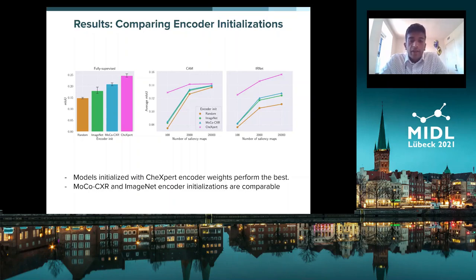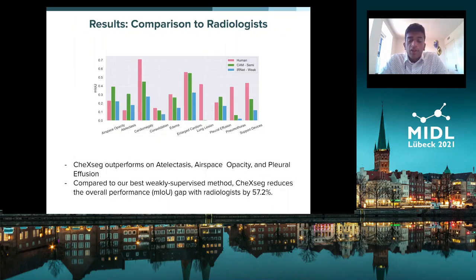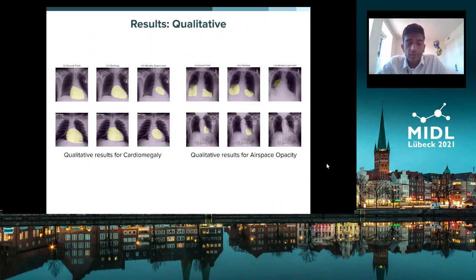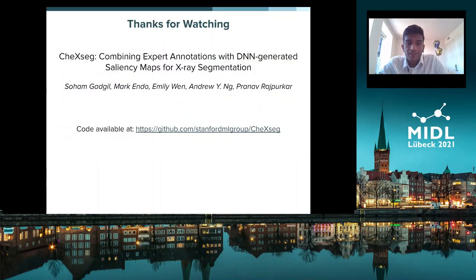Finally, comparing to radiologists, ChexSeg outperforms radiologist performance on three pathologies: atelectasis, airspace opacity, and pleural effusion. Compared to our best weakly supervised method, ChexSeg reduces the gap in mean IOU score relative to radiologists by 57.2%. Looking at qualitative results for cardiomegaly and airspace opacity, ChexSeg provides better segmentation results closer to ground truth compared to the weakly supervised method. Thank you for watching.